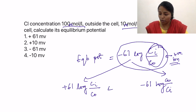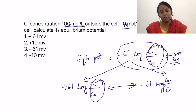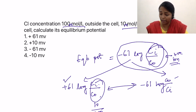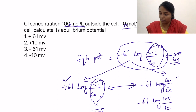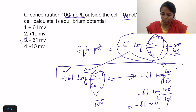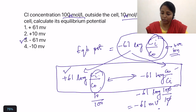You choose whichever form makes division easier. Here, using minus 61 log (outside/inside): outside is 100, inside is 10, so this becomes minus 61 log 100/10 = minus 61 log 10. Log 10 is 1, so the answer is minus 61 millivolts. That is the equilibrium potential for chloride. For a negative ion, either invert the sign or invert the ratio — it is up to you.